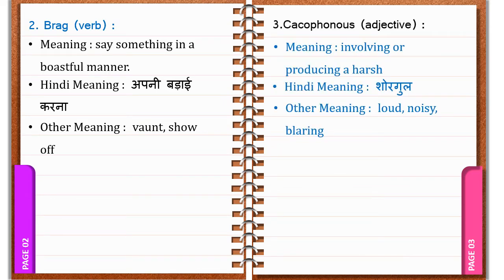Cacophonous. C-A-C-O-P-H-O-N-O-U-S. Cacophonous. It's an adjective. It means involving or producing a harsh sound. In Hindi: Shorgul. Other meanings: Loud, Noisy, Blaring.